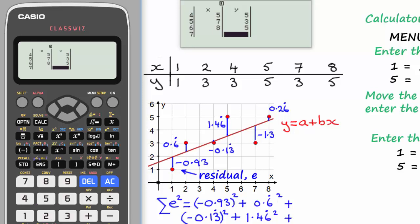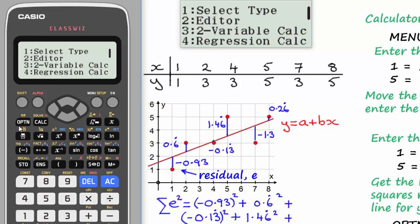So we've now entered all our data into the table, and we need to get the least squares regression line for y on x. And to do that, we go up to here and select the option key. And by pressing that, we're presented with this menu here. And we need to select option 4, regression calculations. So by pressing 4...